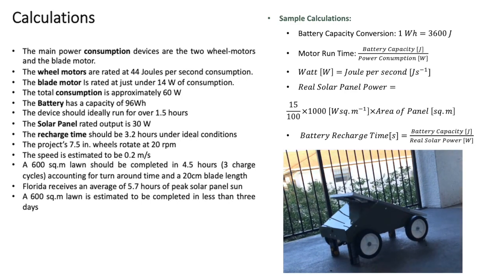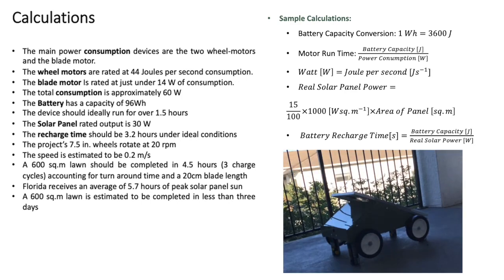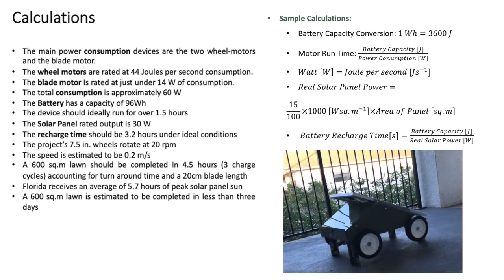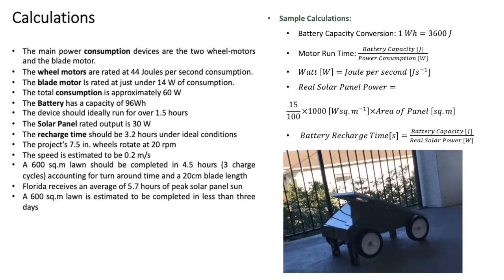For the power supply recharging the battery: the attached 30-watt solar panel should recharge the battery in just over three hours under ideal conditions. With Florida having a daily average of almost six hours of ideal sun, the mower can definitely run at least once per day. Calculations for speed based on wheel and motor RPM are listed on the slide, with a final estimation that the mower will complete a 6,500 square foot lawn in three days.